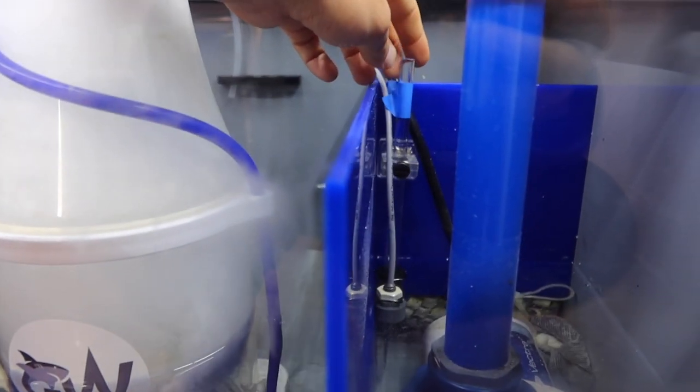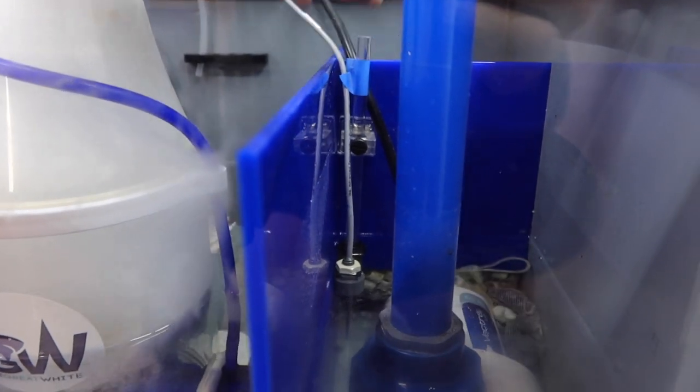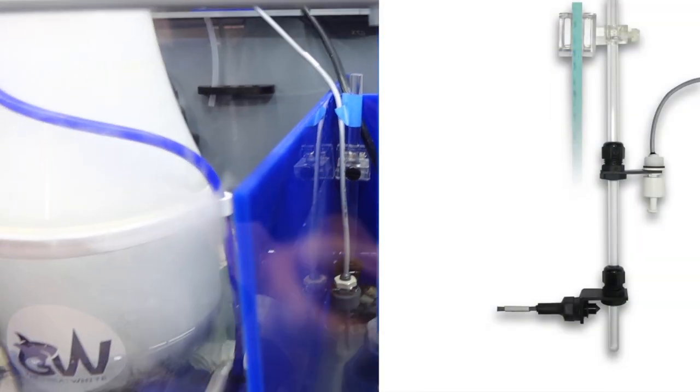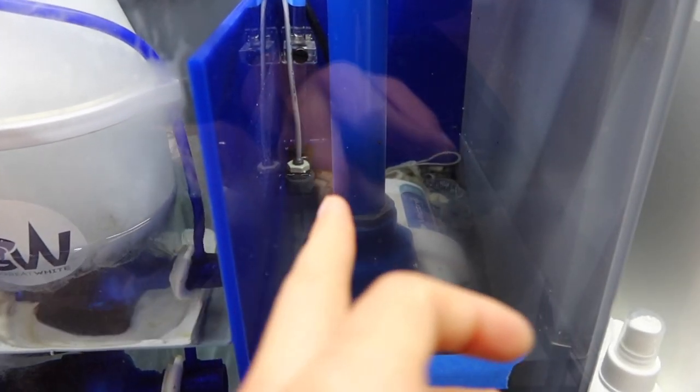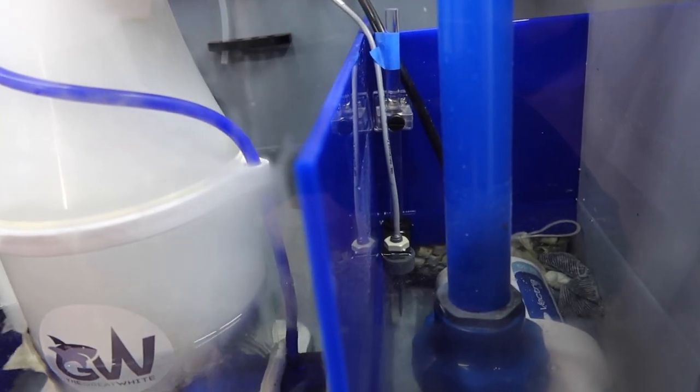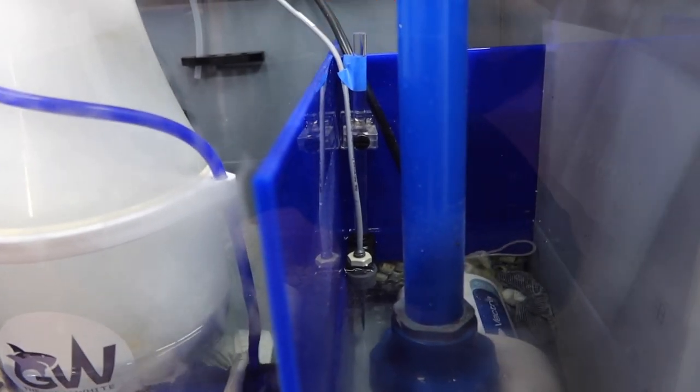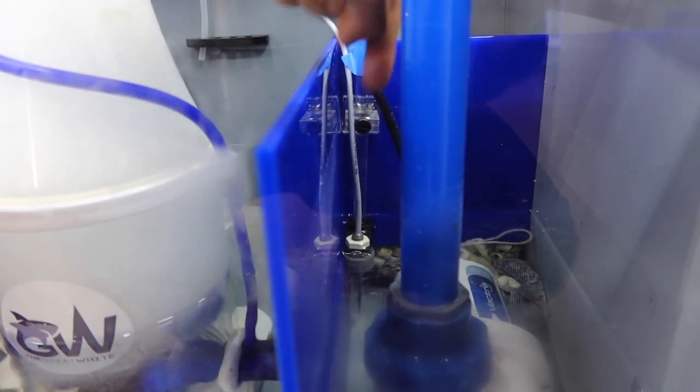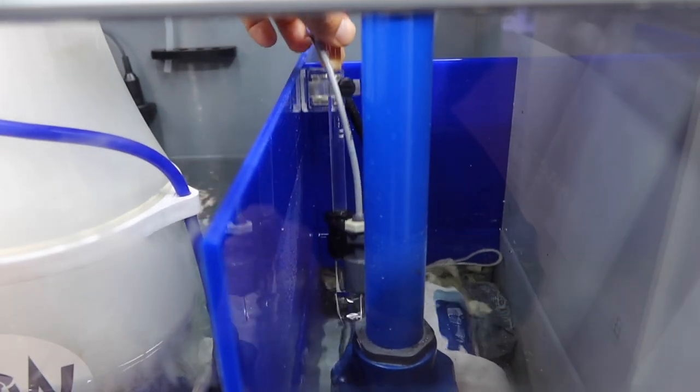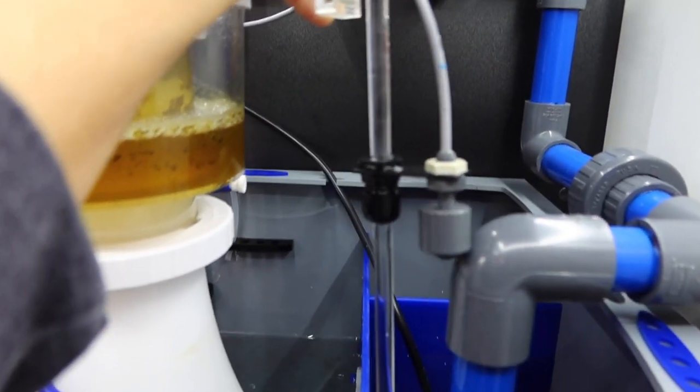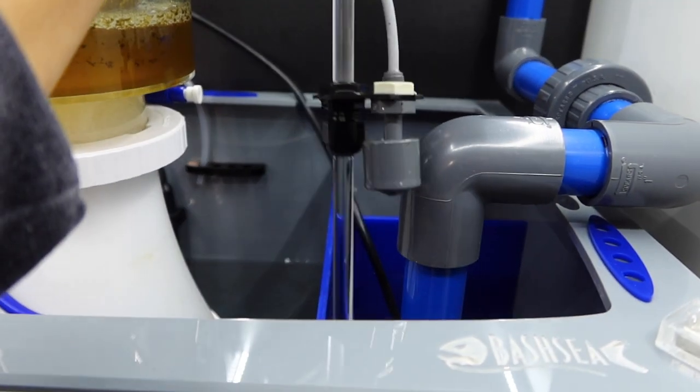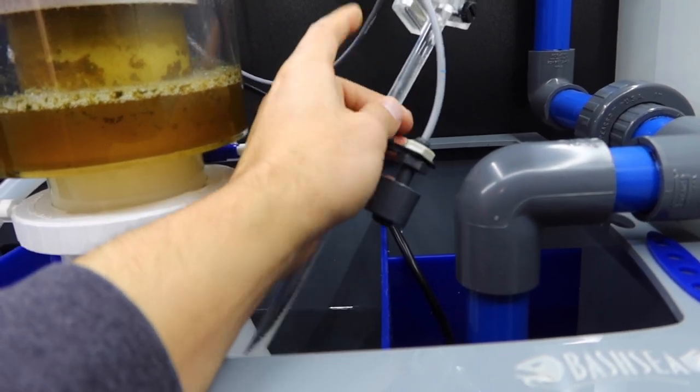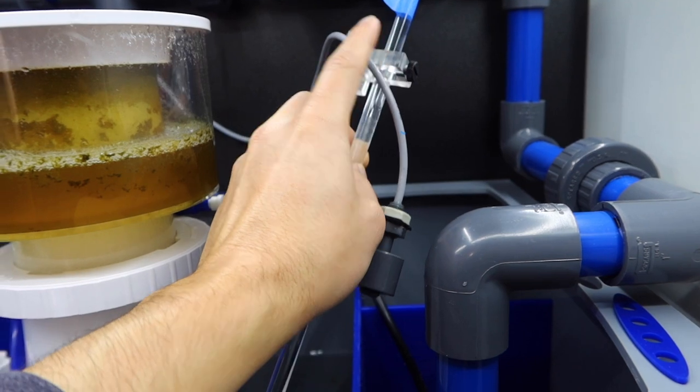The auto top-off I'm using is the GHL auto top-off with the float sensor. They have an optical sensor and a float sensor. The reason I didn't do the optical is because it runs horizontal and I just don't have the space. I'm okay with the float sensor. If you decide to go with the GHL auto top-off, they sell a bracket and rod. You're able to adjust the height of the float switch by adjusting this piece and by moving the overall length of the rod.